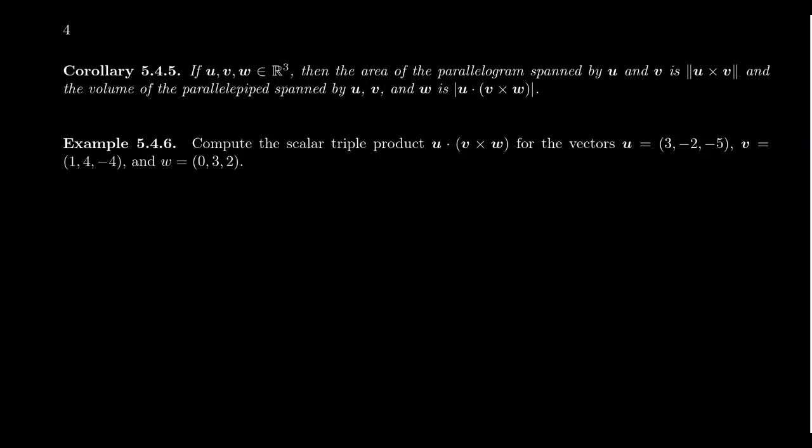The following theorem: if you take three vectors u, v, w in R³, then the area of the parallelogram spanned by u and v, its area is going to be the norm of u cross v. And then the volume of the parallelepiped spanned by u, v, and w - so remember the parallelepiped, this is like a three-dimensional parallelogram - the volume of that thing is going to be the absolute value of this scalar triple product.